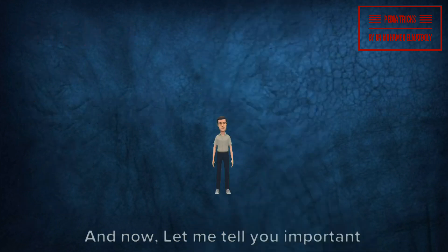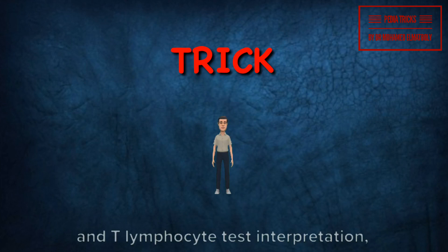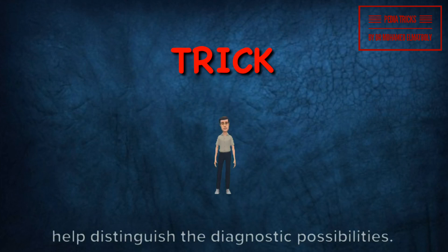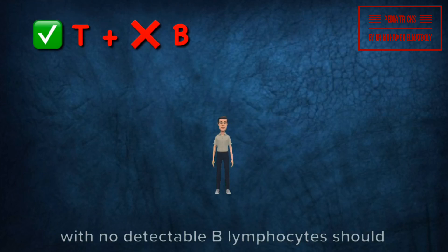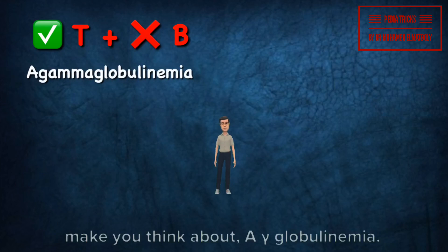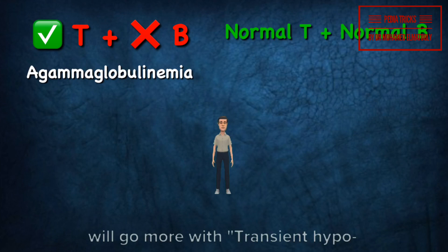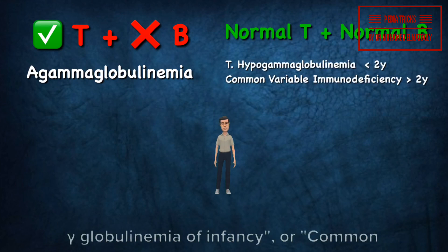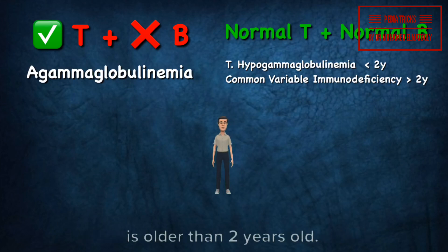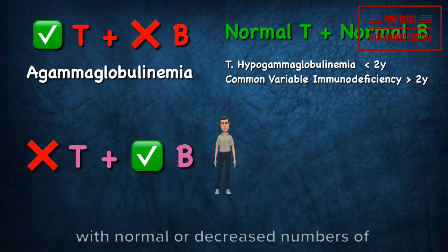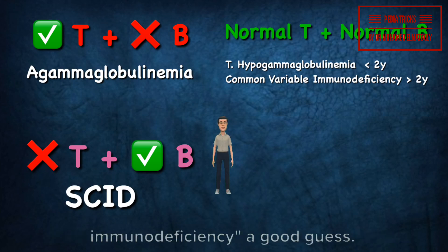Here is an important clinical and exam trick on how B and T lymphocyte test interpretation can help distinguish diagnostic possibilities. Normal numbers of T lymphocytes with no detectable B lymphocytes should make you think about agammaglobulinemia. Normal numbers of T and B lymphocytes go more with transient hypogammaglobulinemia of infancy, or common variable immunodeficiency if the patient is older than 2 years. Decreased numbers of T lymphocytes with normal or decreased numbers of B lymphocytes make severe combined immunodeficiency a good guess. Decreased CD4 lymphocytes suggest HIV infection.